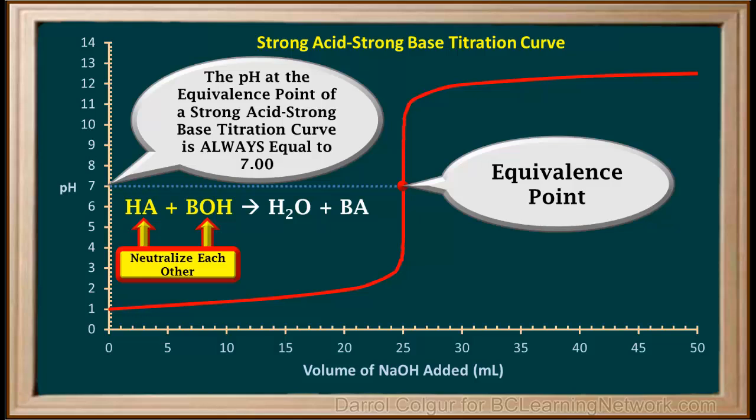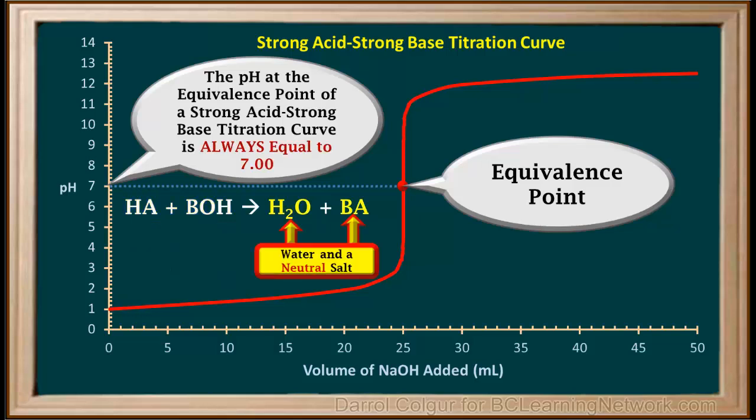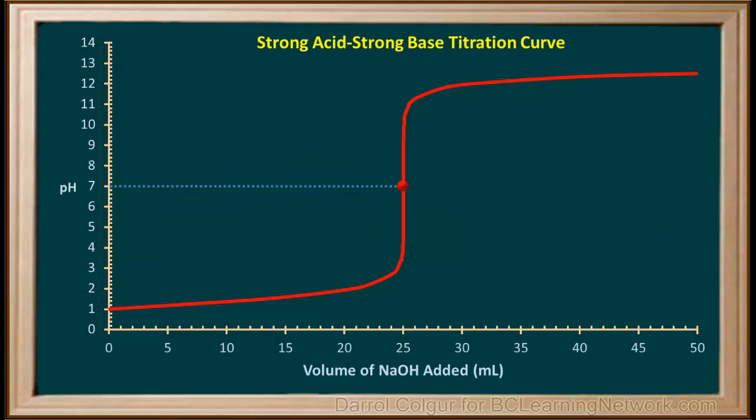This is because at the equivalence point, the strong acid and strong base completely neutralize each other, and all we're left with is water and a neutral salt, so the mixture is neutral and the pH equals 7. After the equivalence point, when the base is in excess, the curve resembles a reverse reflection of what it was before the equivalence point. Notice the curve has a sort of S shape.